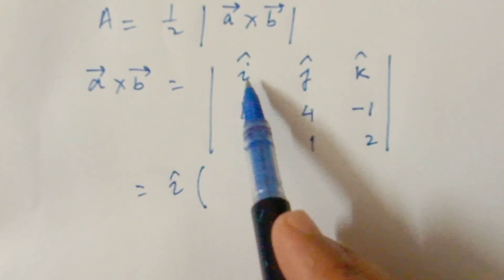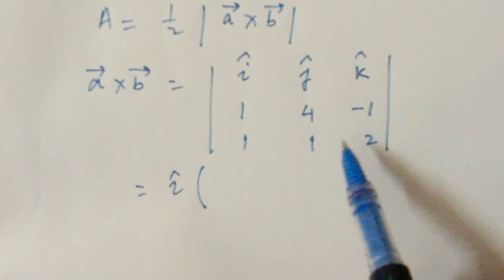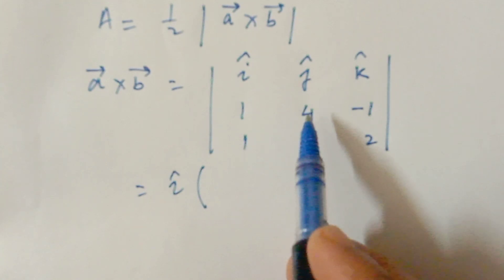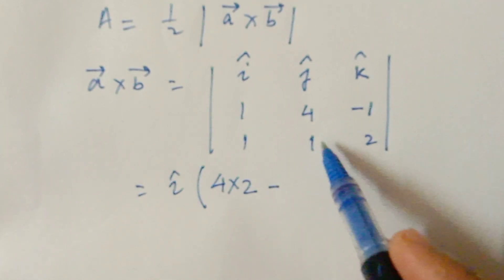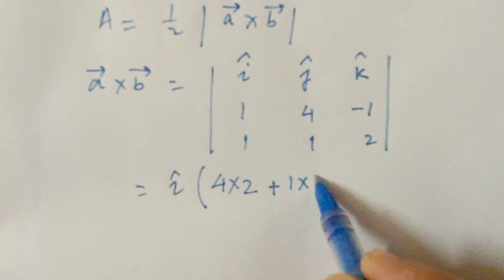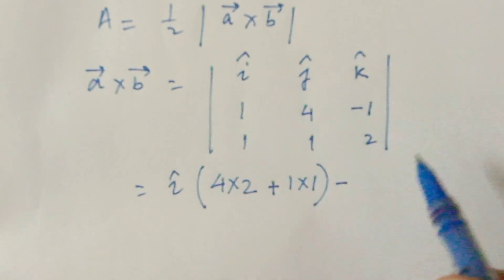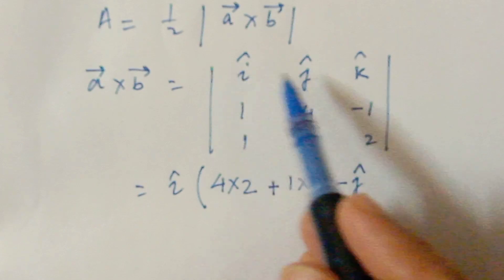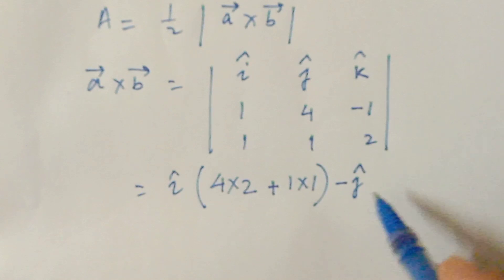Now solve the determinant. For the i component, leave the first column and first row, leaving 4, minus 1 in the top and 1, 2 in the bottom. Then 4 into 2 minus minus 1 into 1. The sign pattern for the cofactors is plus, minus, plus — so for j we take minus j.